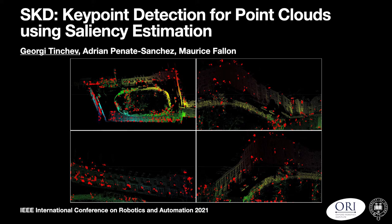Hi everyone, my name is Georgi Tinchev and I'm a PhD student at the University of Oxford from the Oxford Robotics Institute. Today I will talk to you about estimating keypoints in 3D point cloud data with the help of saliency. This work has been done in collaboration with Adrián Penante-Sanchet and my supervisor Maurice Fallon. The teaser image you can see here is an illustration of our method extracting keypoints from LIDAR data of the Oxford RobotCar dataset.